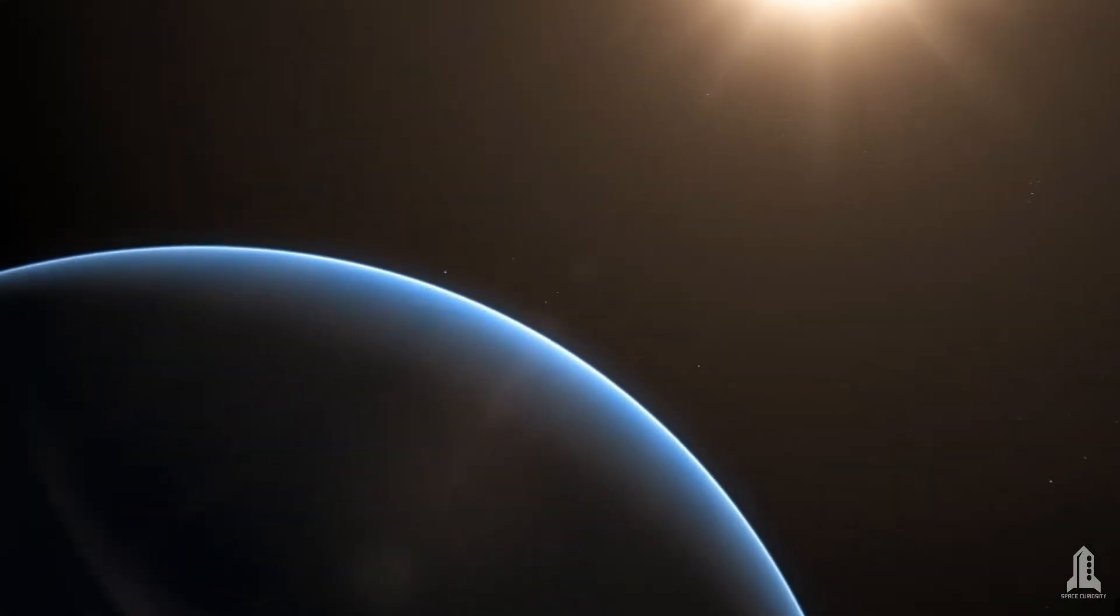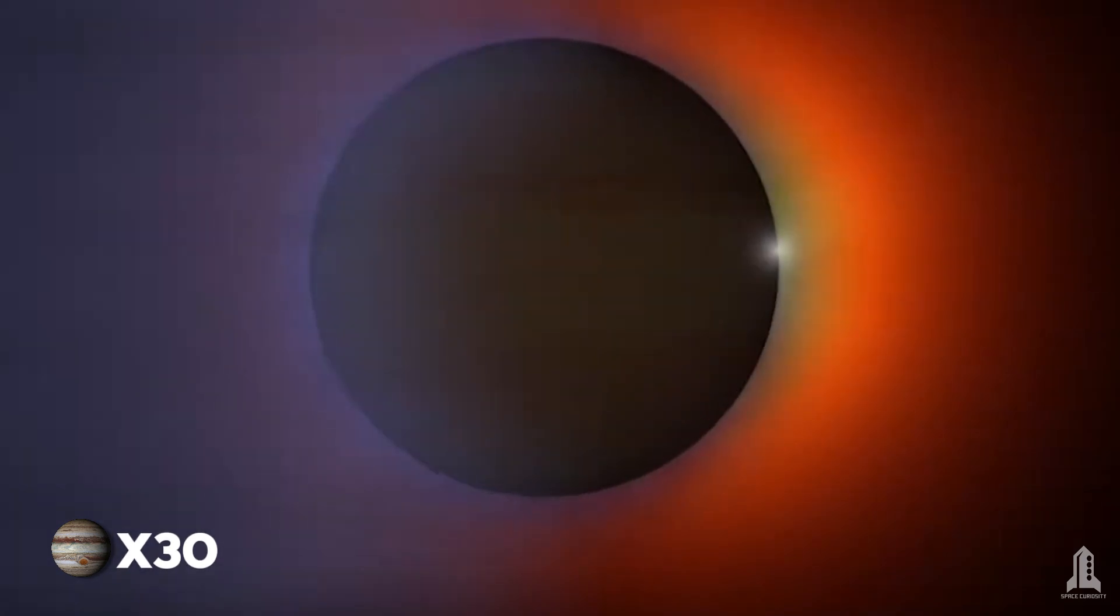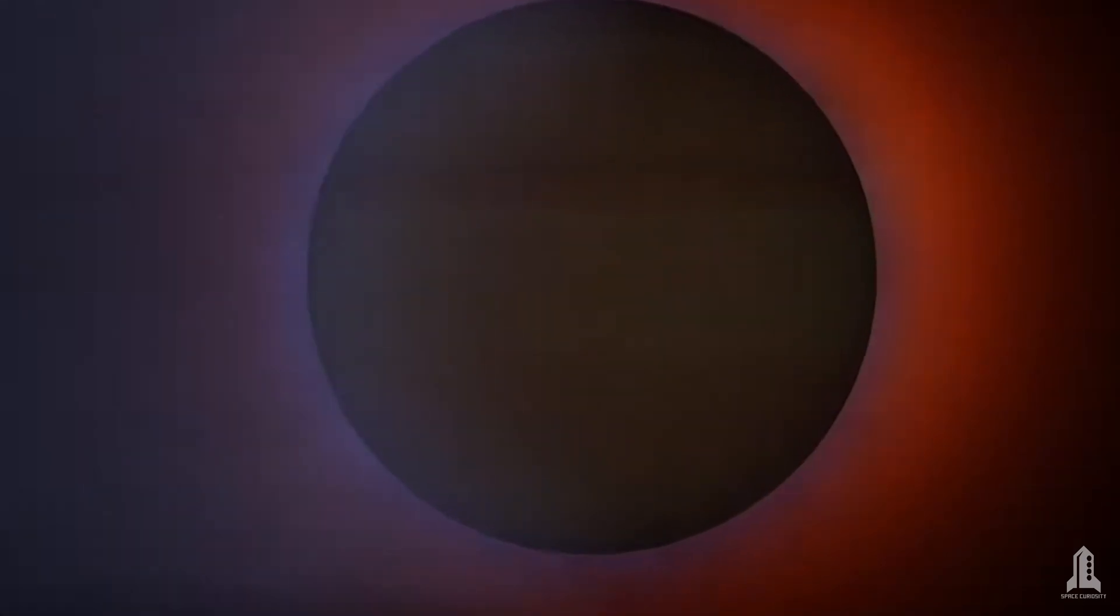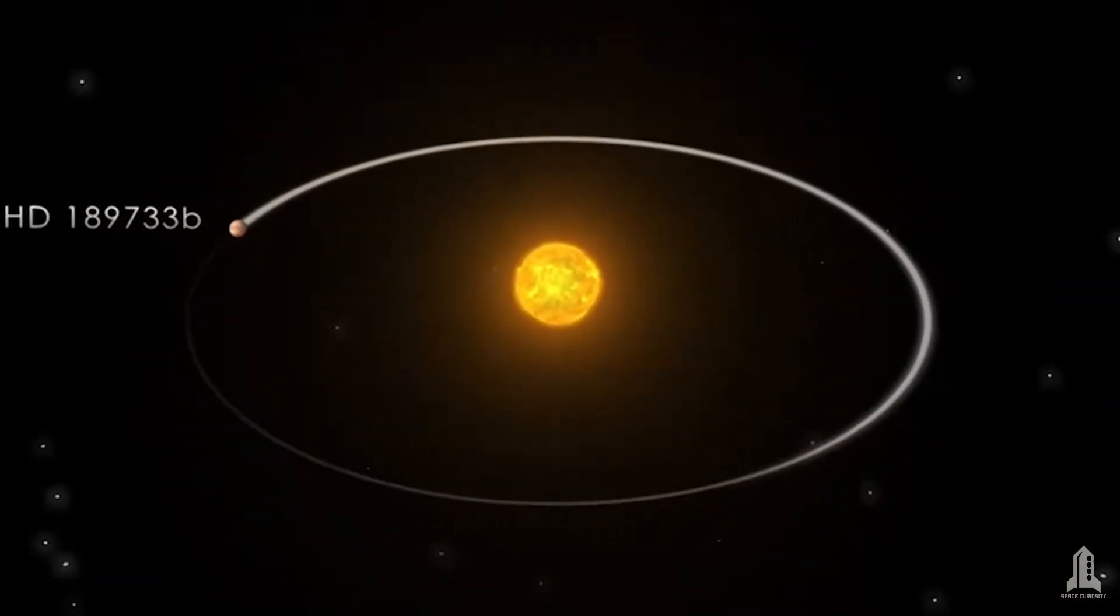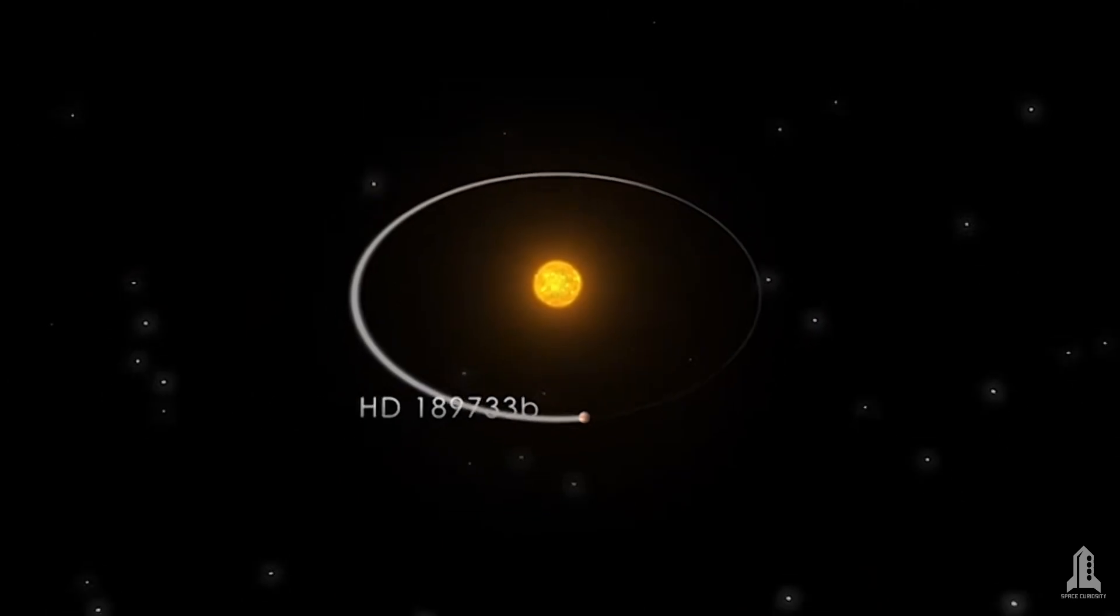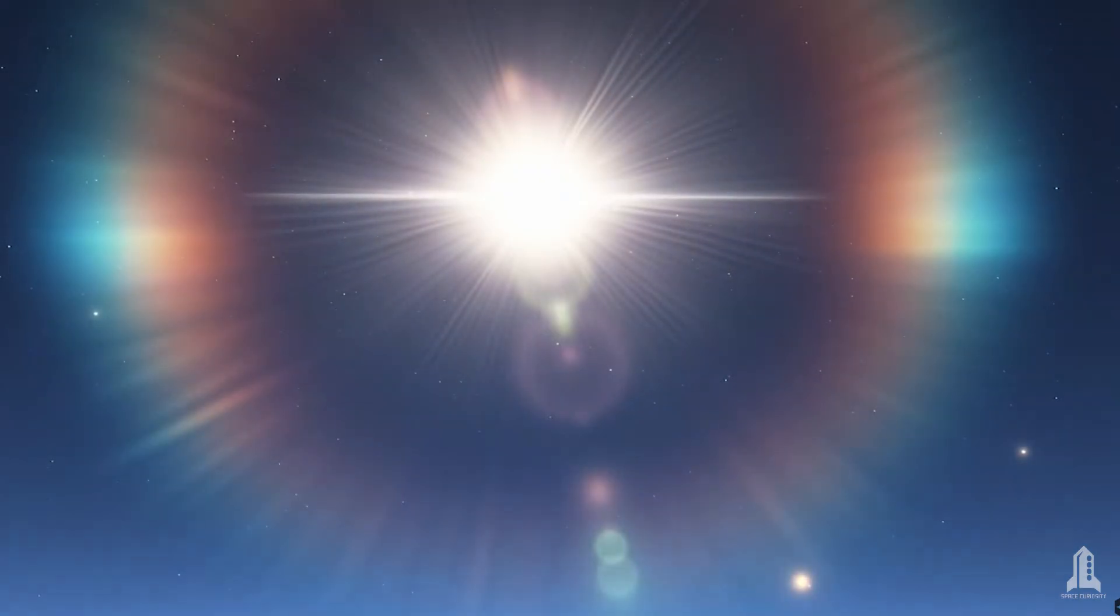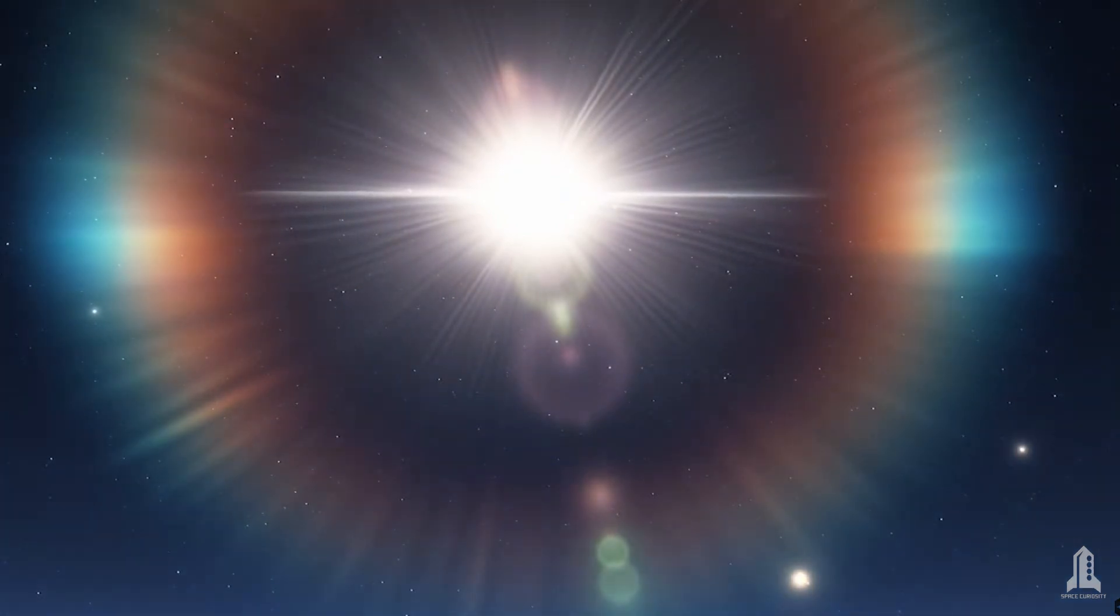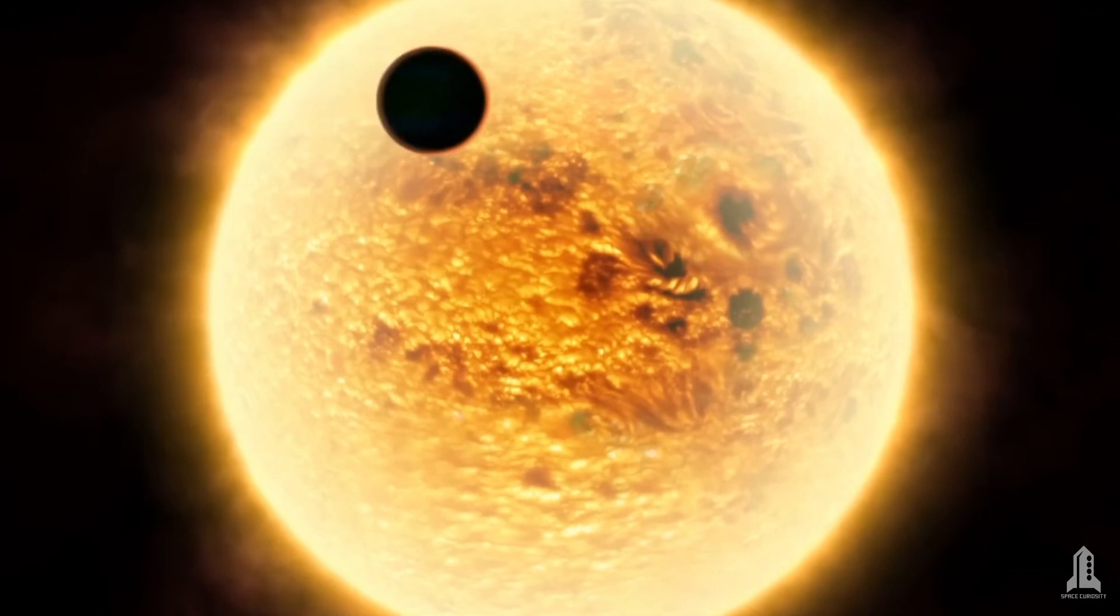It falls into the category of gas giants, with a mass about 13 times that of Jupiter and a diameter 10% larger. It is a hot Jupiter because it orbits very close to its star, completing an orbit in just 2.2 Earth days. Its proximity to the parent star means it is tidally locked, always showing the same face to the star, just like the moon does with Earth.